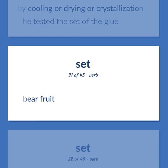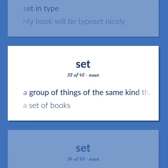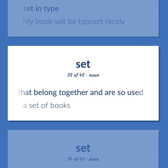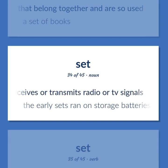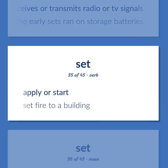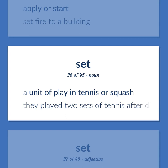Set: bear fruit; set in type — my book will be typeset nicely. A group of things of the same kind that belong together and are so used — a set of books. Any electronic equipment that receives or transmits radio or TV signals — the early sets ran on storage batteries. Apply or start — set fire to a building. A unit of play in tennis or squash — they played two sets of tennis after dinner.